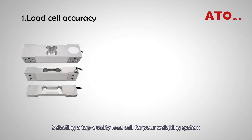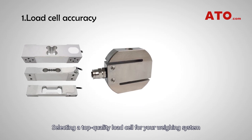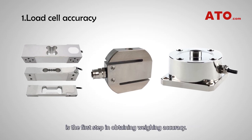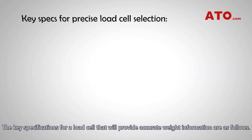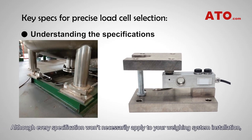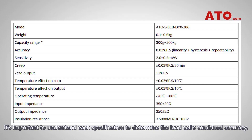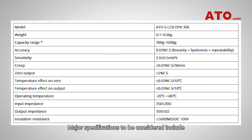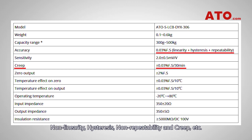Load cell accuracy. Selecting a top quality load cell for your weighing system is the first step in obtaining weighing accuracy. The key specifications for a load cell that will provide accurate weight information are as follows. Although every specification won't necessarily apply to a weighing system installation, it's important to understand each specification to determine the load cell's combined accuracy. Major specifications to be considered include non-linearity,